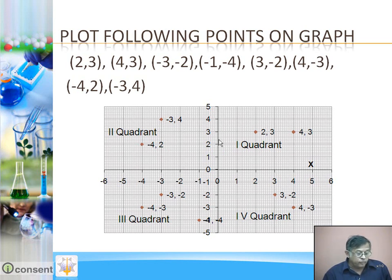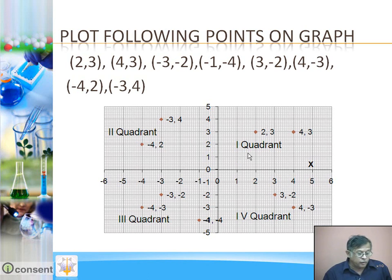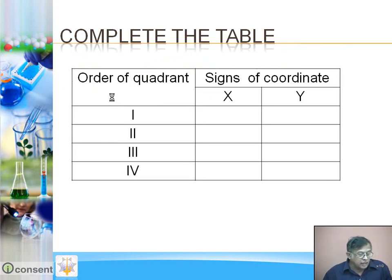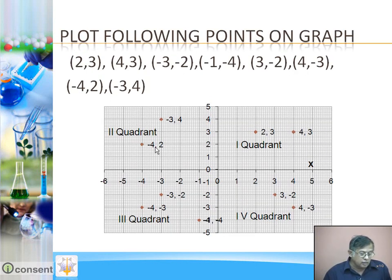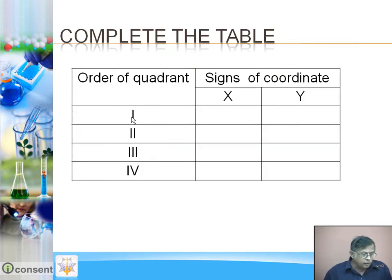These two intersecting lines — the x-axis and y-axis — divide the plane into four parts. This is the 1st quadrant, this is the 2nd quadrant, this is the 3rd quadrant, and this is the 4th quadrant. This is the sign convention. Now observe the signs of the coordinates of points in each quadrant and fill in the table.